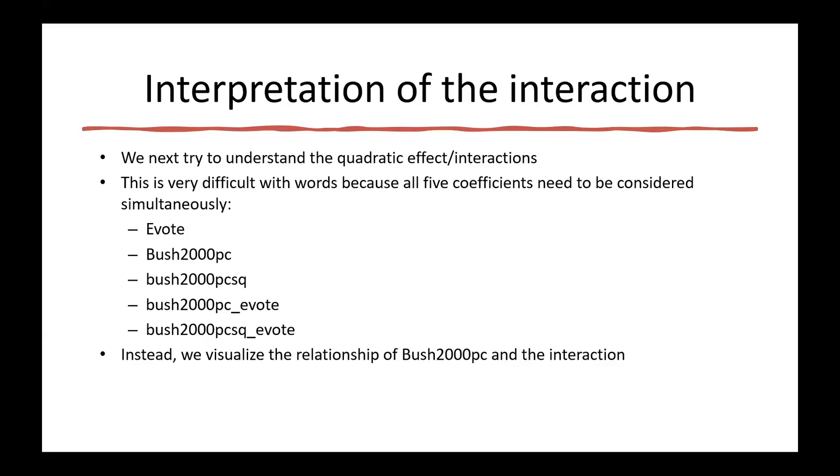We now try to understand the interactions, and then after that we'll also look at the quadratic effect. The model had three additional variables, and we have the situation now where there are five variables that are generated from just two originating variables. Evote is one, and Bush 2000 is the other one. We have also the square term and the two interactions.